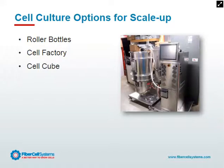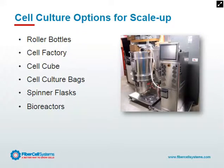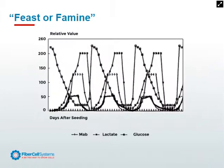Options for cell culture scale-up include roller bottles, cell factory, cell cube, bags, spinner flasks, and bioreactors such as a 50-liter bioreactor. These are all non-physiologic ways of growing cells at low density — 1 to 5 times 10 to the 6 cells per milliliter. In suspension-type culture, we also have to put surfactants into the media to protect cell membranes from shear forces. All of these methods, to a greater or lesser degree, subject the cells to what we call feast or famine — a non-homeostatic process where cell culture conditions are constantly changing.